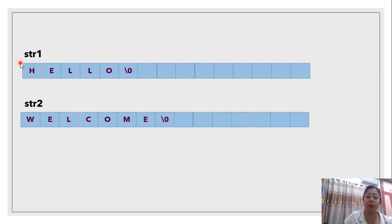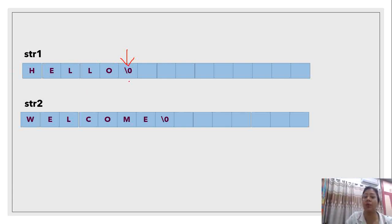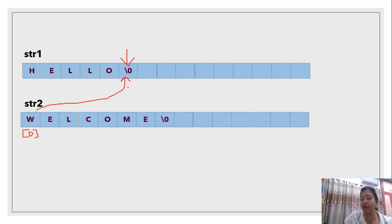We have two strings, STR1 and STR2. We will start to insert new characters into STR1. To do this, we first get the string length of STR1. We start entering from the position indicated by the string length. After we increment the length, the pointer will point to the next empty position, and the value will be placed there.